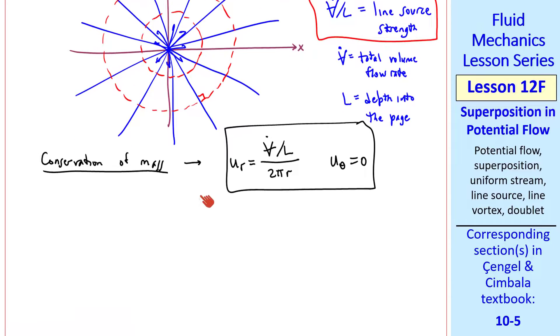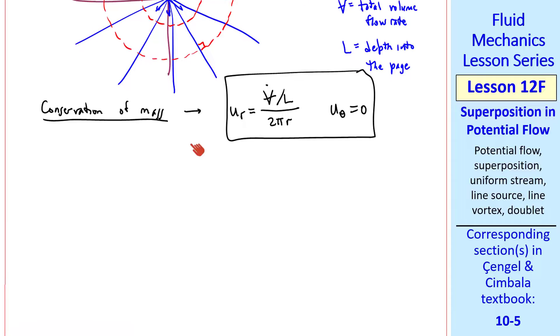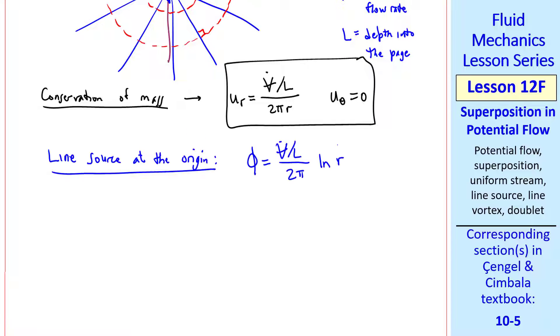You can do similar algebra to what we did with phi and psi for the uniform stream, and you could show that phi equal v dot over L divided by 2 pi times the natural log of R, and psi is v dot over L over 2 pi times theta. I've left out the arbitrary constants.